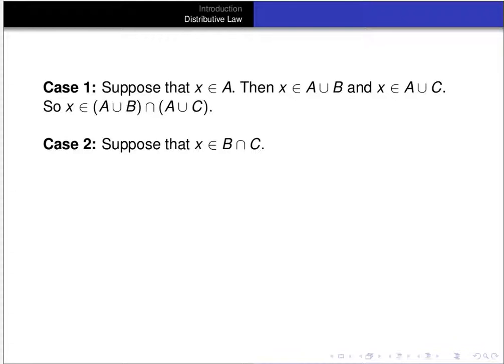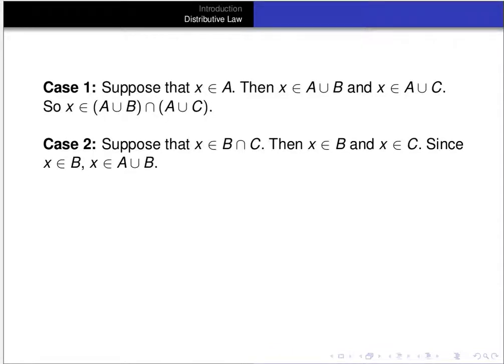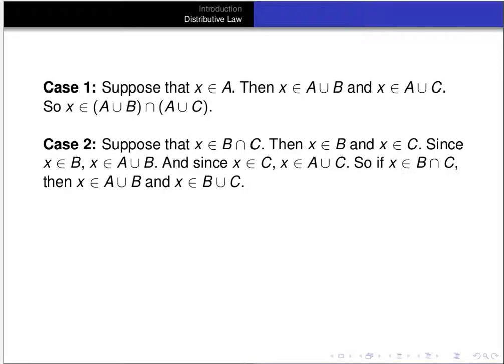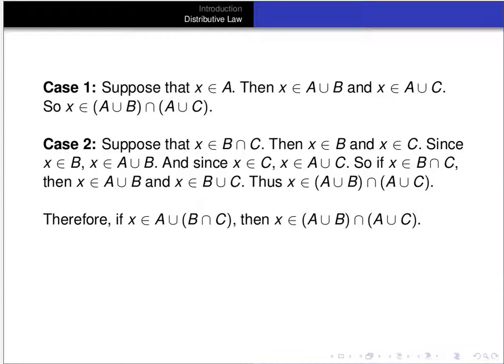So x is in (A∪B)∩(A∪C) since it's in both of those sets. In case two, suppose x is in B∩C. Then x is in B and x is in C. Since x is in B, it follows that x is in A∪B. Since x is in C, it follows that x is in A∪C. Therefore x is in (A∪B)∩(A∪C). So in both cases, if x is in A∪(B∩C), it winds up being in (A∪B)∩(A∪C). It follows that A∪(B∩C) is a subset of (A∪B)∩(A∪C).